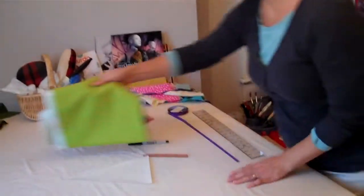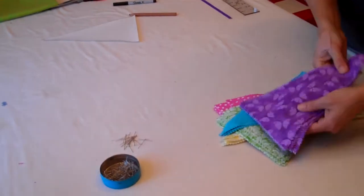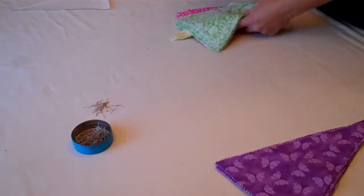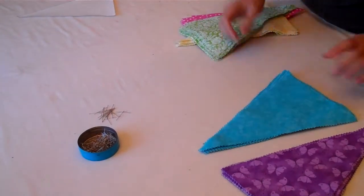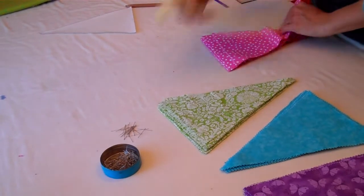Then when you get all your flags cut, I had five different fabrics, you've got to decide on a pattern of how you want your colors to go. We did ROYGBIV because you can't go wrong with the colors of the rainbow in the order that the rainbow has.